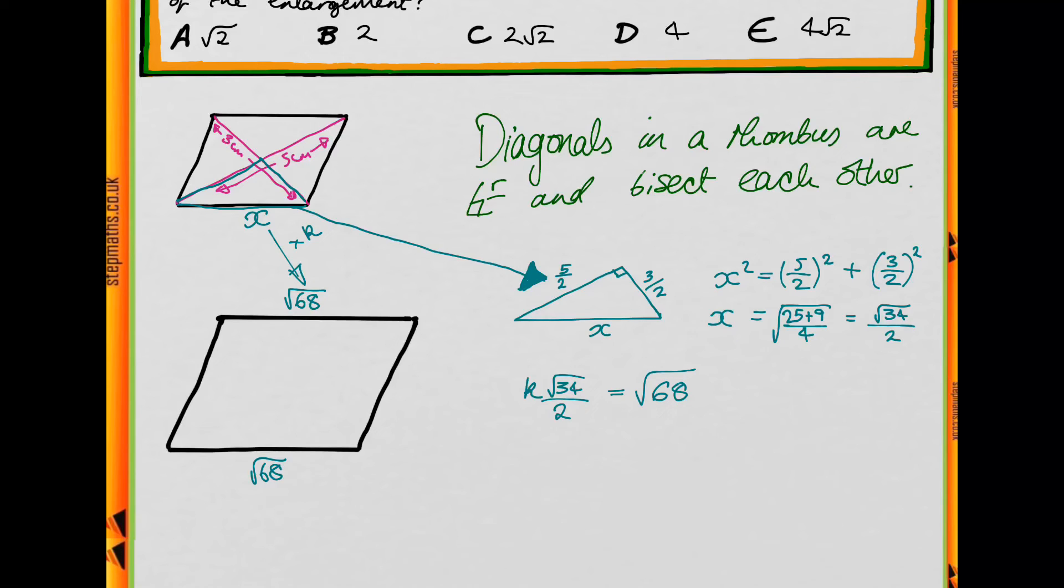Well, we're going to take K and multiply it by our original X. And we know that we want that to equal our new side length, which is √68. So rearrange this for K. Okay, well, K is going to be equal to, move the 2 up, so 2√68 divided by √34.